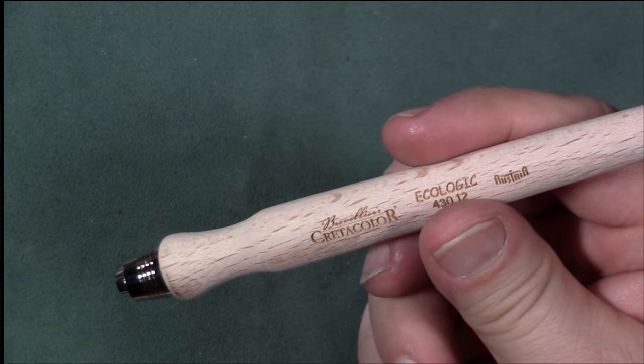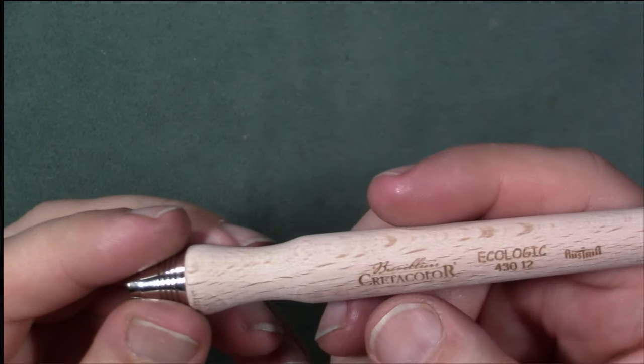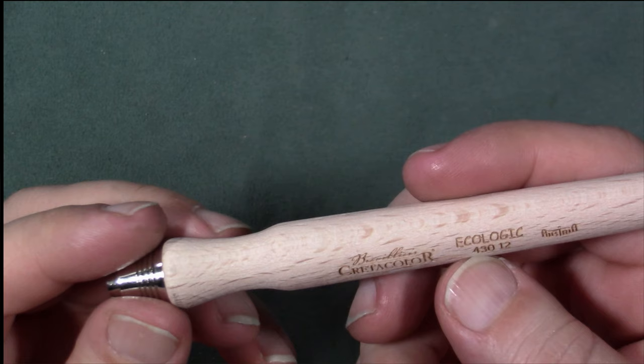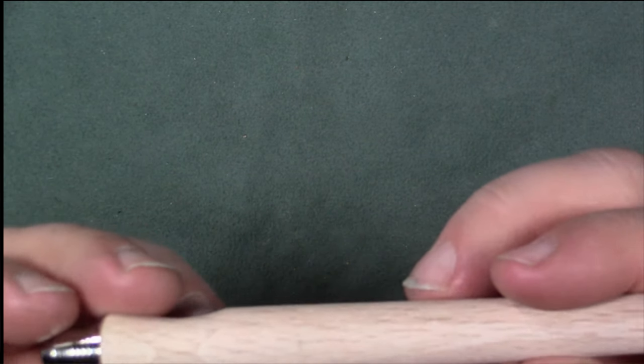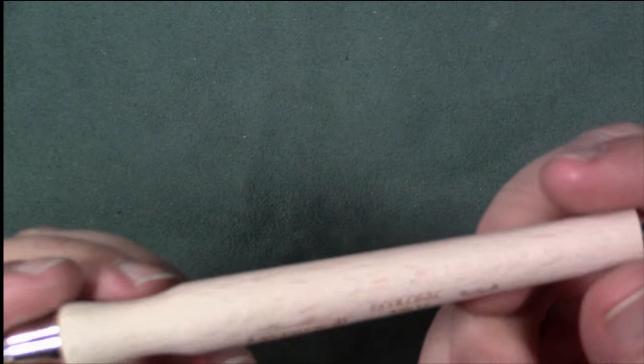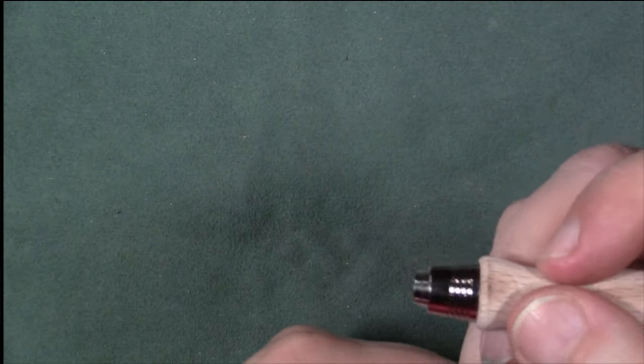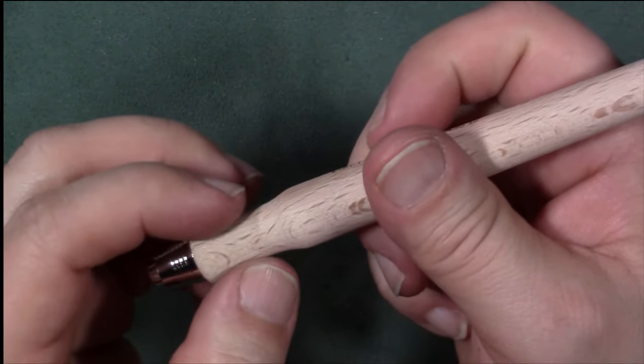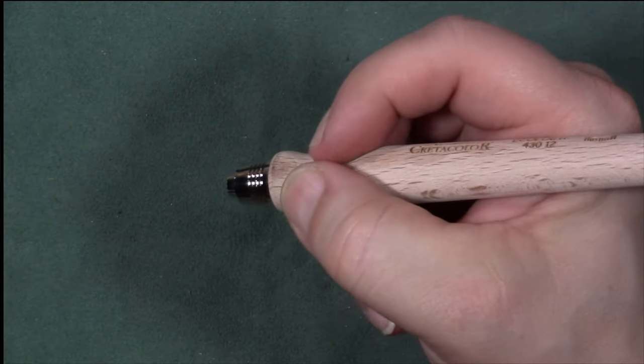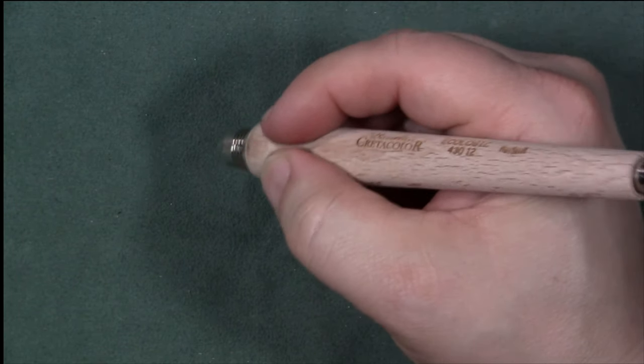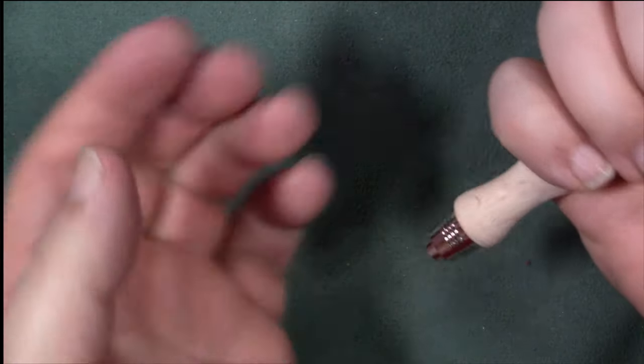Let's just put this a little closer here so we've got Creative Color, so Ecologic, model number 430-12, Australia. So I guess it's made in Australia. Wow, very nice actually. I kind of like this little divot here. It actually makes it easy for you to hold it. It's pretty cool.